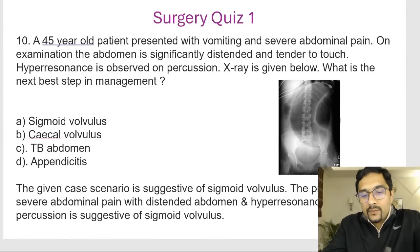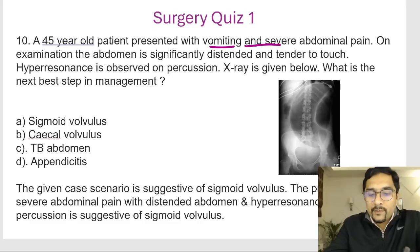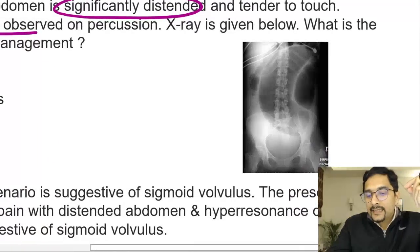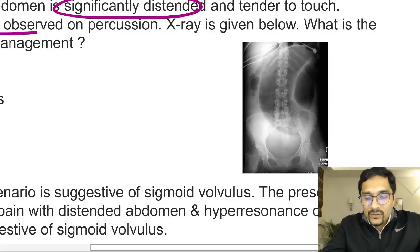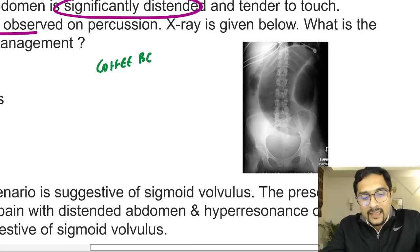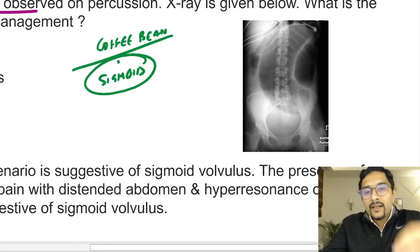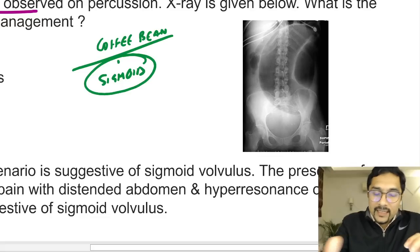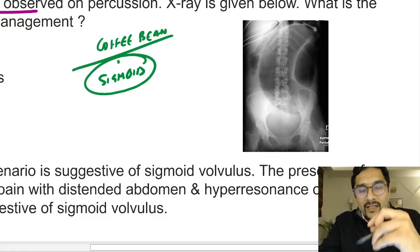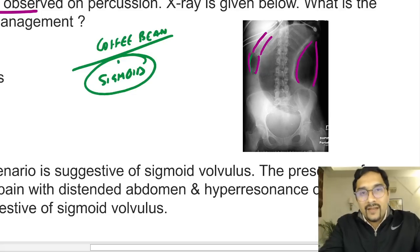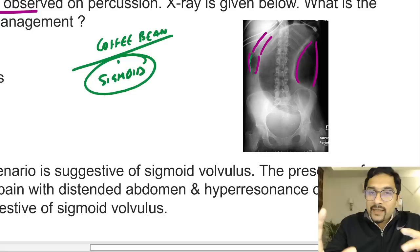A 45-year-old patient presents with vomiting, severe abdominal pain, significantly distended abdomen with tenderness, and hyper-resonance on percussion. The X-ray shows a coffee bean sign, which is suggestive of sigmoid volvulus. In sigmoid volvulus, you also see other dilated loops of large bowel — you can see those loops on the image.